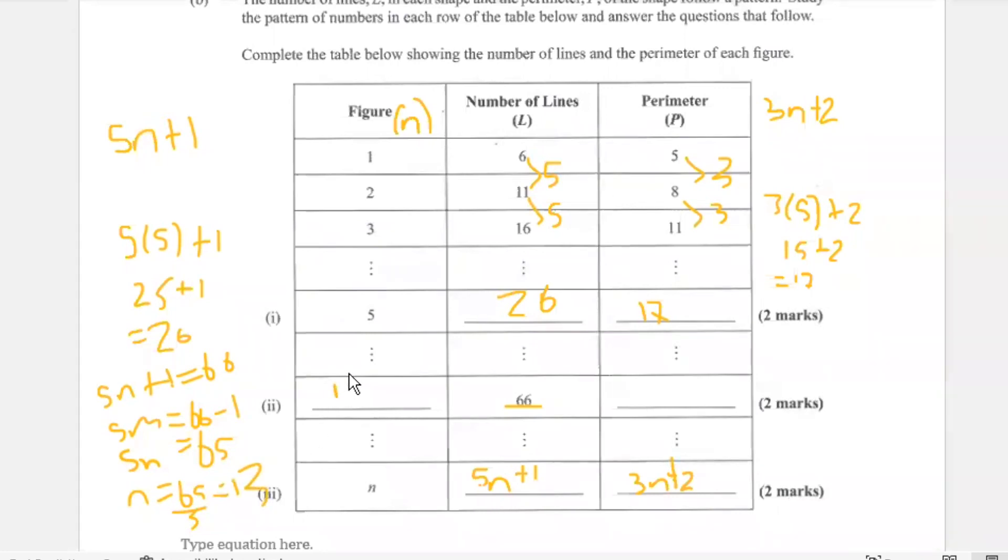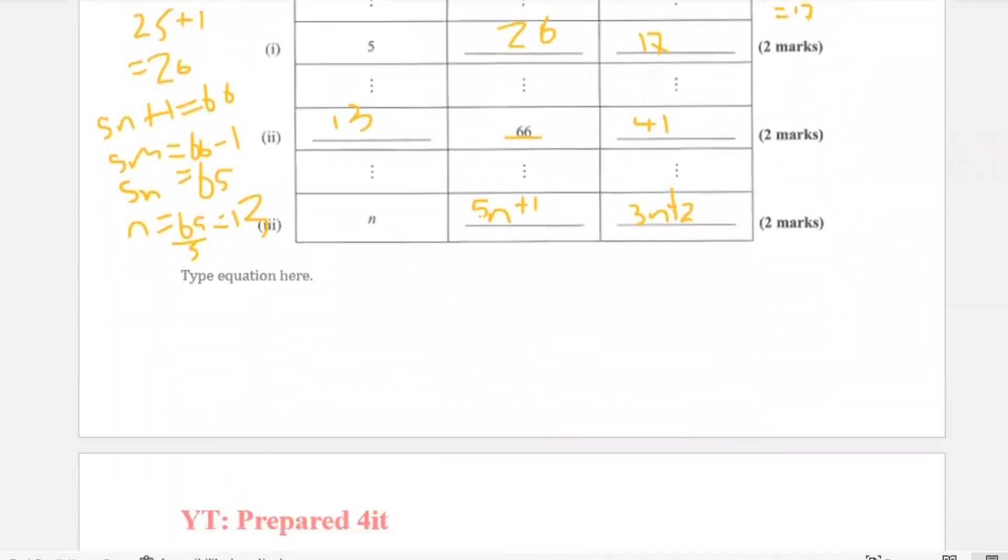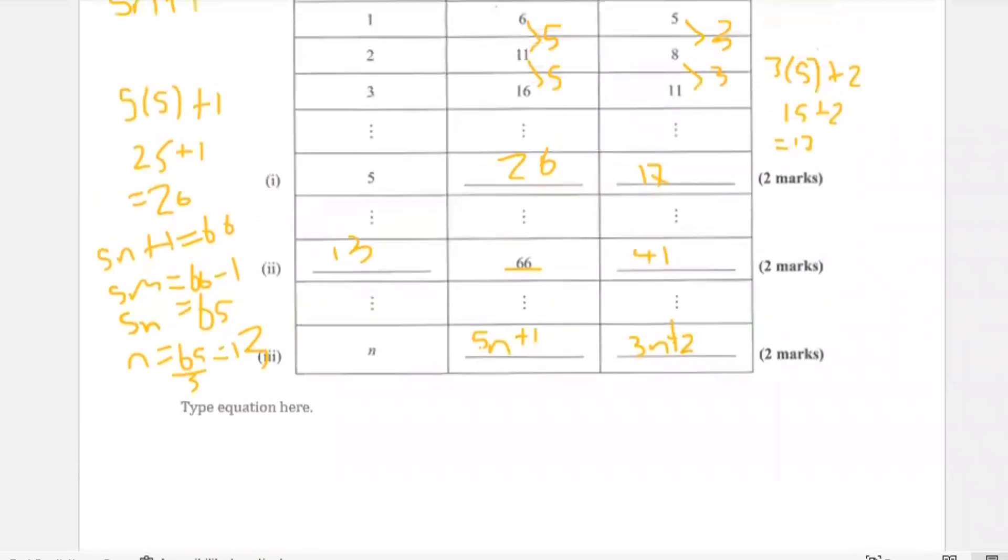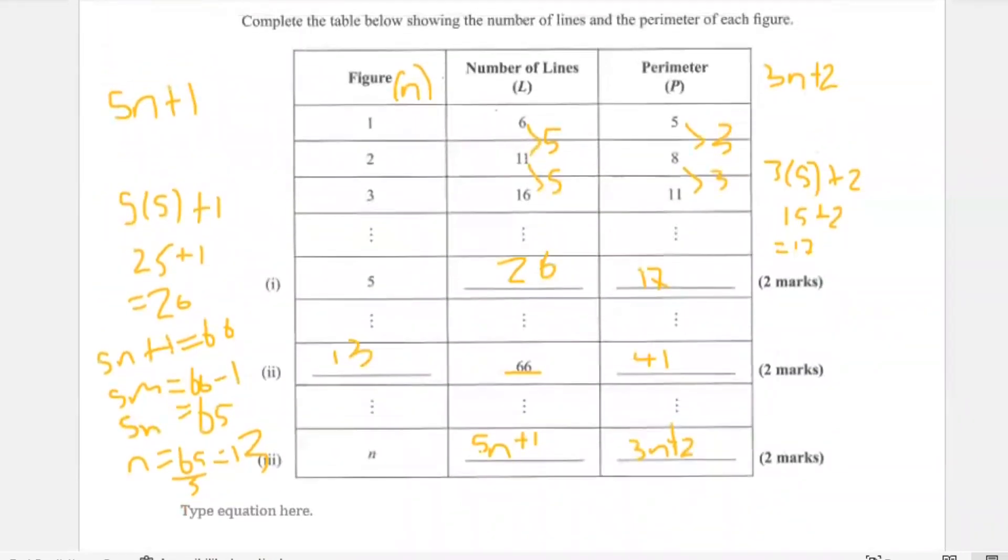And what is the perimeter? 41. So all you did was put 13 now into a formula of 3 times 13 plus 2, and indeed you will get 41. And this is your completed table. Let me just give you a second for those who are probably still looking.